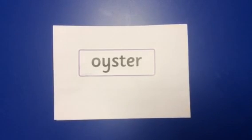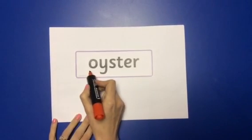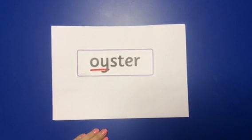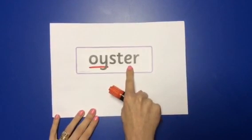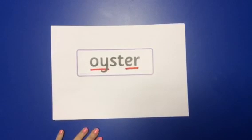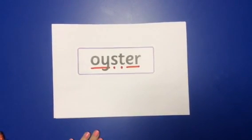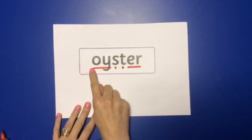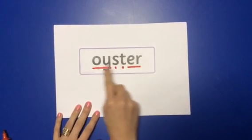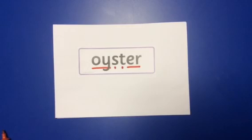Right, let's look for any digraphs, trigraphs or split digraphs. Yes, I can see one here — these two letters are working together to make the 'oi' sound. Are there any more? Yes, we've got the 'er' digraph. I can't see any more, so these must be short, simple sounds. I'm now ready to use my sound buttons to blend the phonemes together. Oy-st-er. Oyster. Yes, that makes sense — I've heard of oysters. They live at the bottom of the sea and have shells. Some people eat oysters.